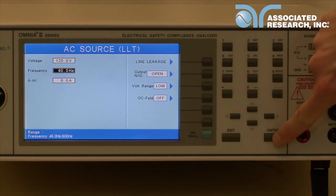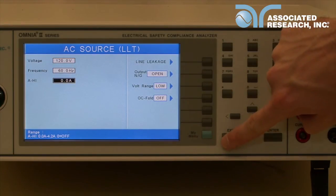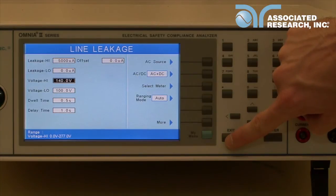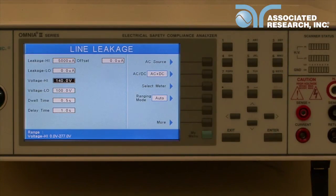Set the necessary voltage, frequency, and current high limit. Press exit once complete. The power source will now output your set voltage and frequency during the corresponding line leakage or run test.